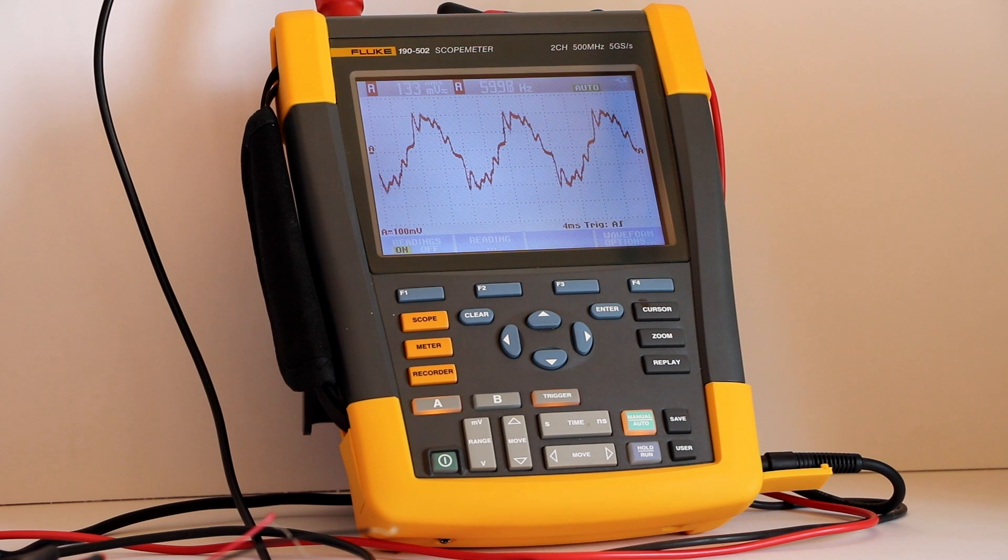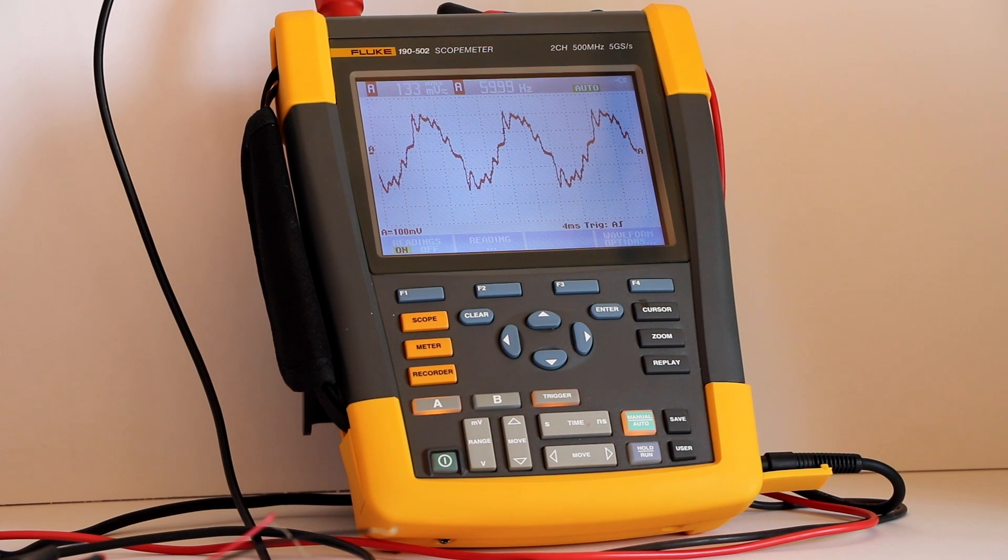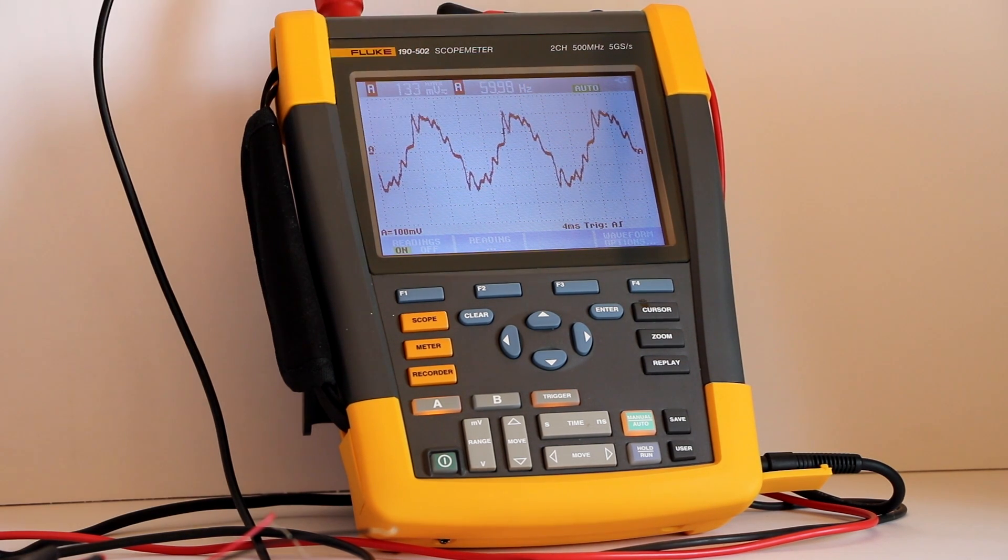First, an observation. The Fluke 19502 scope meter is capable of operating off the AC power line with or without the internal battery in place. If the battery is installed, and if it is good, it will be charging whenever the AC power is connected. A small icon that looks like an AC power plug is in the upper right-hand corner of the display, and it indicates the instrument is receiving AC power. When the AC power is disconnected, if there is a good charged battery in place, the scope meter will continue to operate.